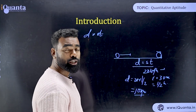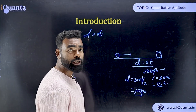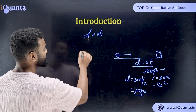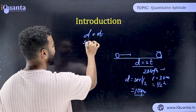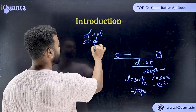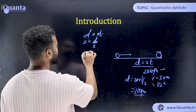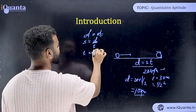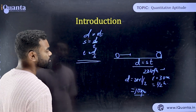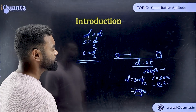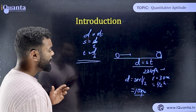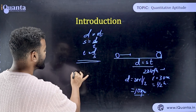From D = S×T, you can also derive: speed S = distance/time, and time T = distance/speed. That is the basic foundation of Time Speed Distance.